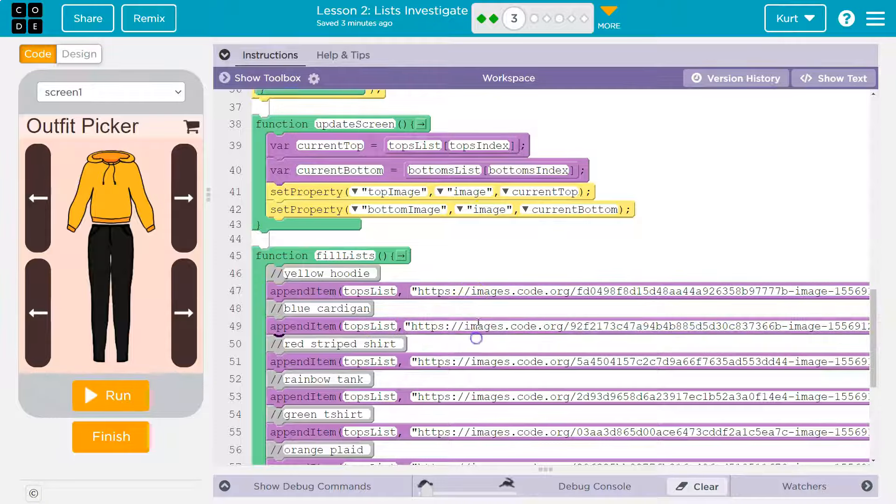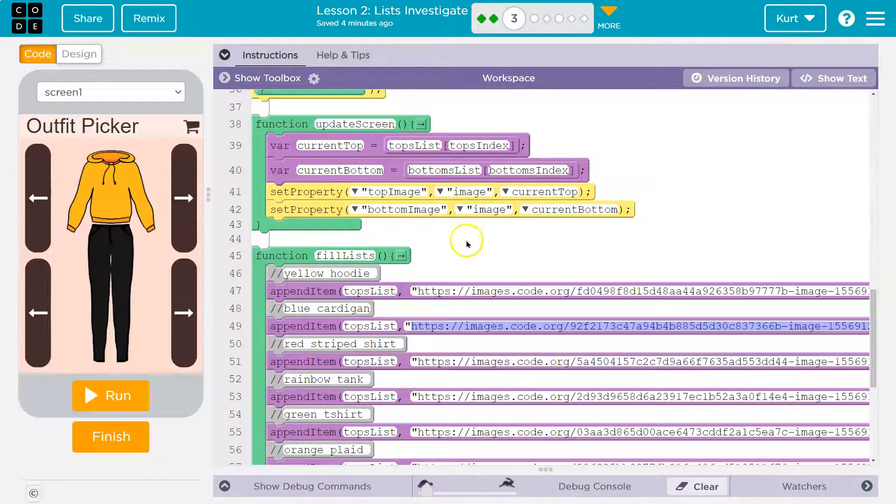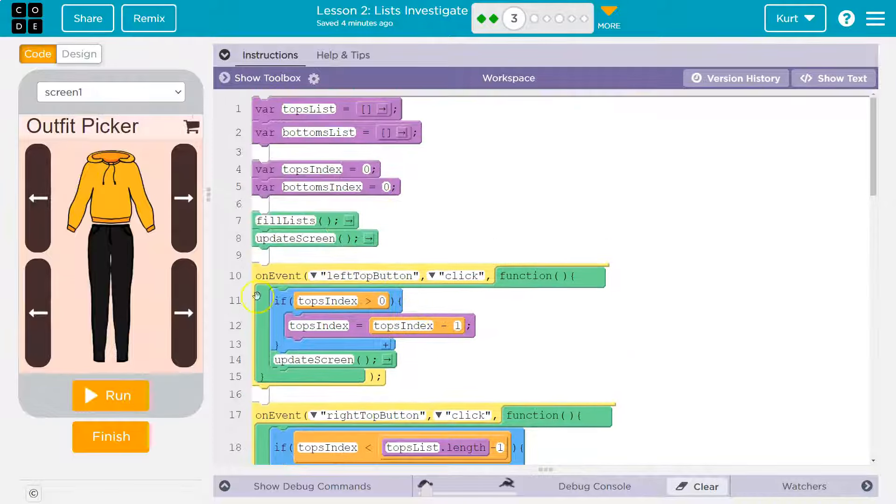The second index, which is index one, because we start counting at zero. So the second index, which is index two, is this item. All right. So that is what is going on there.